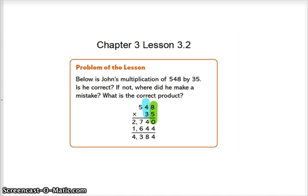So 4 times 5 is 20, but you add the 4 so it's 24. You put the 4 in the tens and the 2 in the hundreds.